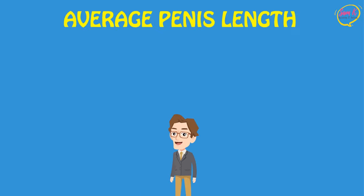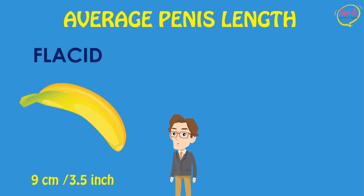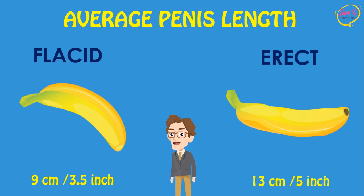Research shows that the average penis length worldwide is about 9 centimeters when flaccid, or about 3 1⁄2 inches, and 13 centimeters when erect, or just over 5 inches.